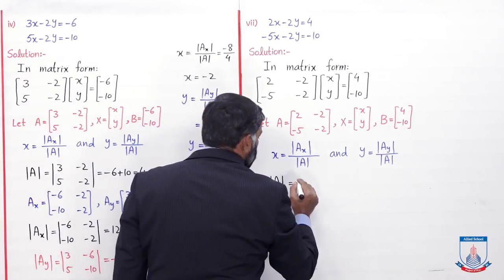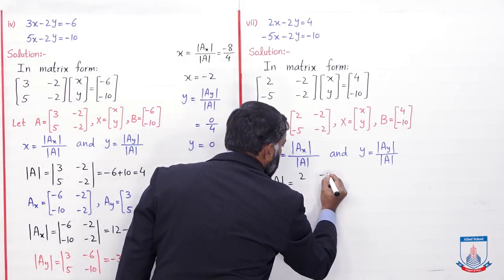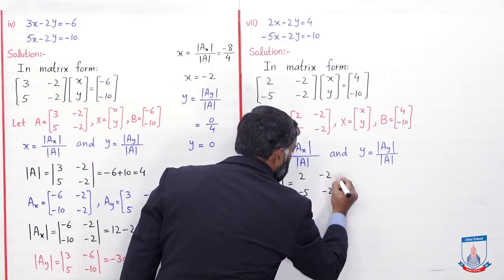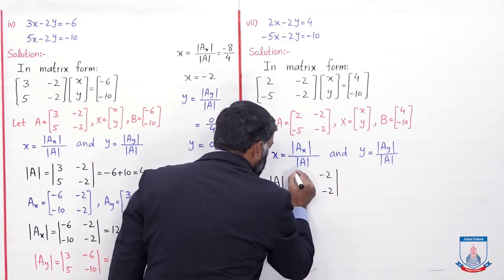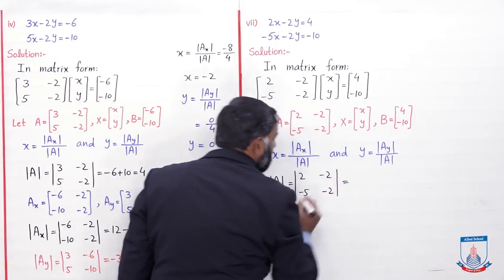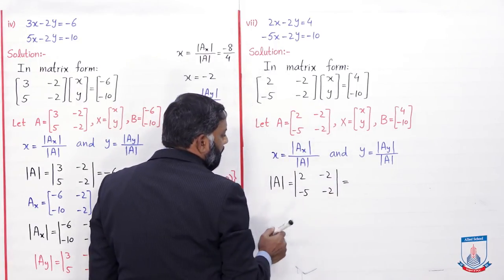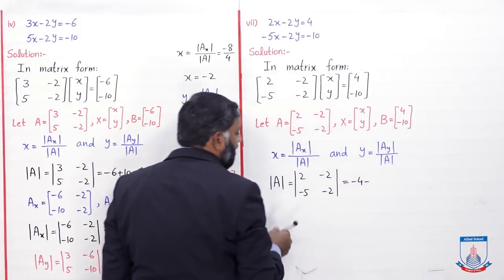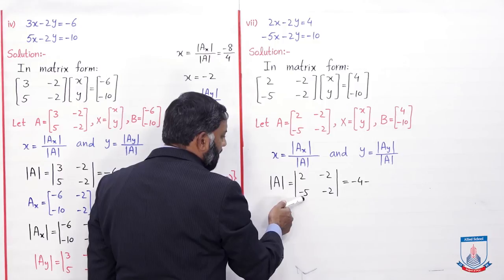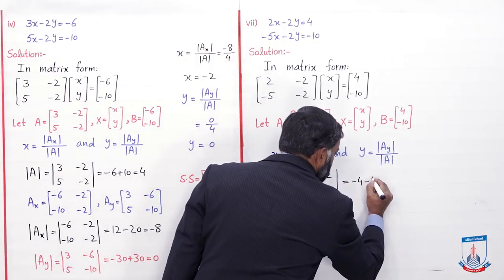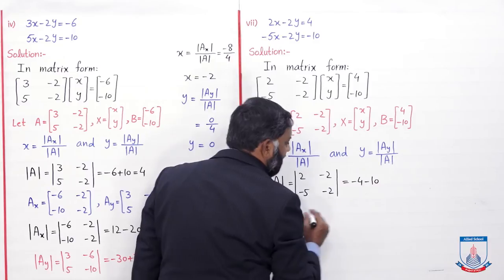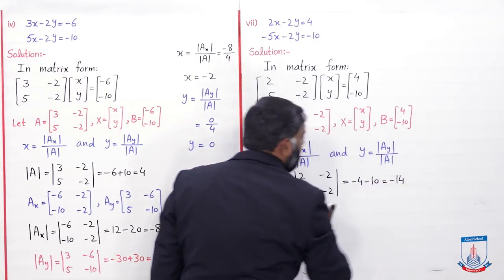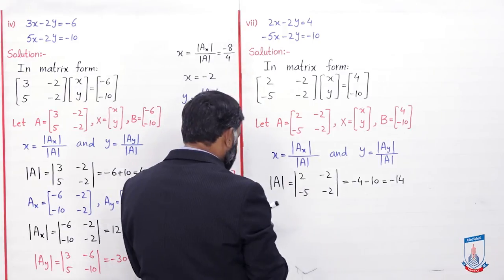A matrix hai [2, -2; -5, -2]. Determinant ka symbol lagayenge. Diagonal entries ko multiply karein: 2 × (minus 2) = minus 4. Minus non-diagonal entries ko multiply karein: toh result plus 10 aayega. Toh minus 4 minus 10 = minus 14. Det(A) ki value minus 14 aayi. Ab Ax matrix likhenge.